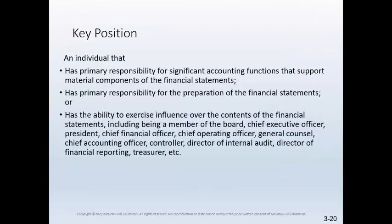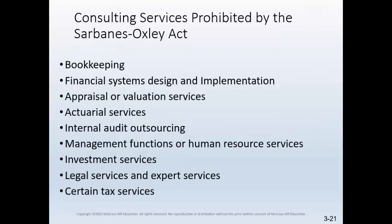Important to the effect of immediate family and close relatives on a covered member's independence is whether the relative is employed in a key position in an organization. A key position is one that includes primary responsibility for or influence over the contents of the financial statements. Examples of key positions are members of the board of directors, chief executive officer, president, chief financial officer, chief operating officer, general counsel, controller, and treasurer, as well as others as shown on the slide.